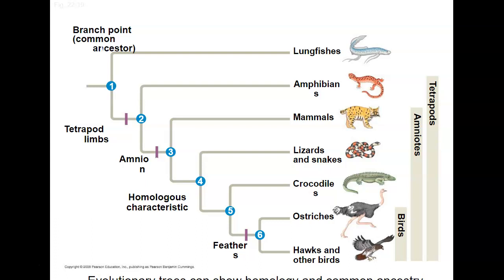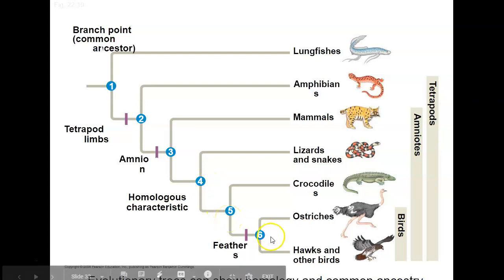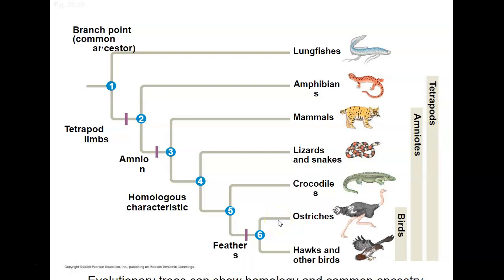You can build evolutionary trees from homologous structures. Whether it's four limbs, or an amnion — having an amniotic sac, whether it be an egg or something else — there are homologous characteristics you can identify. For example, feathers is something that all birds have in common, and so on.